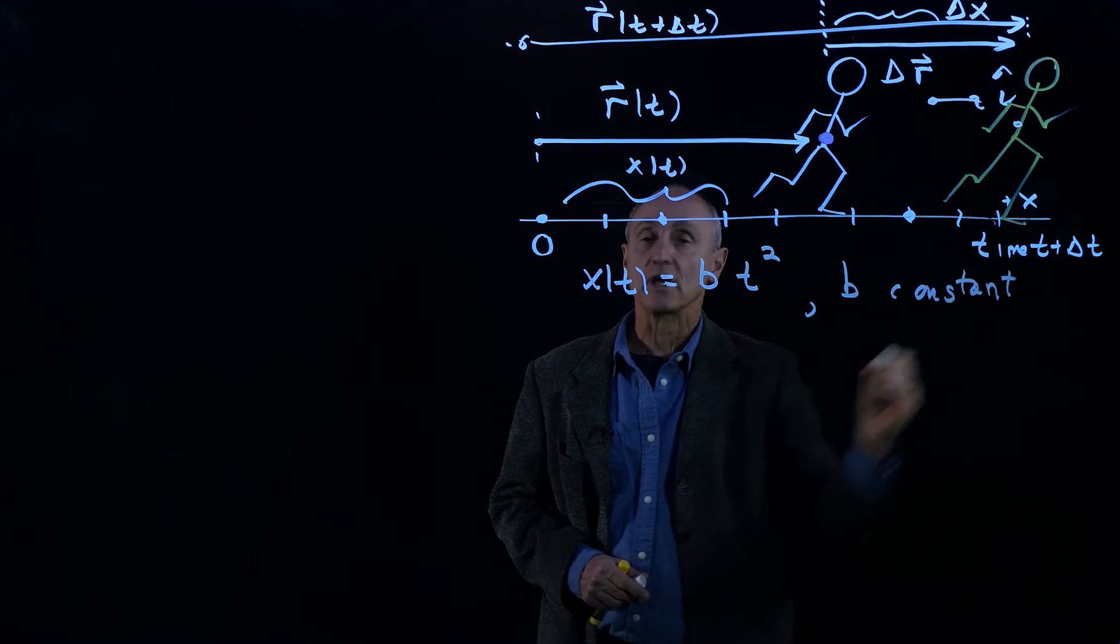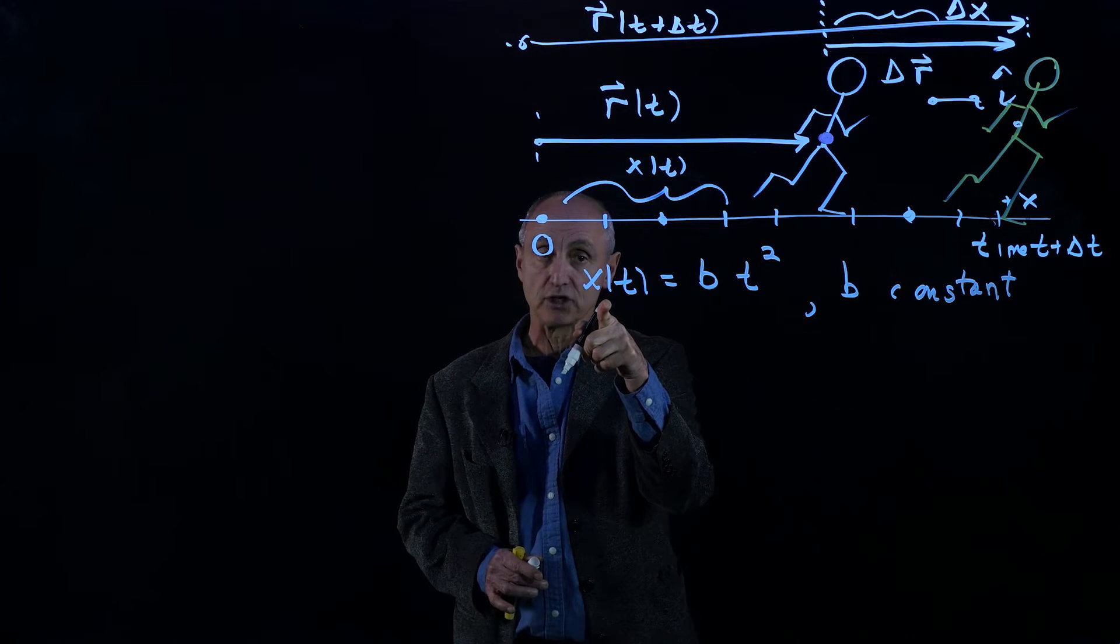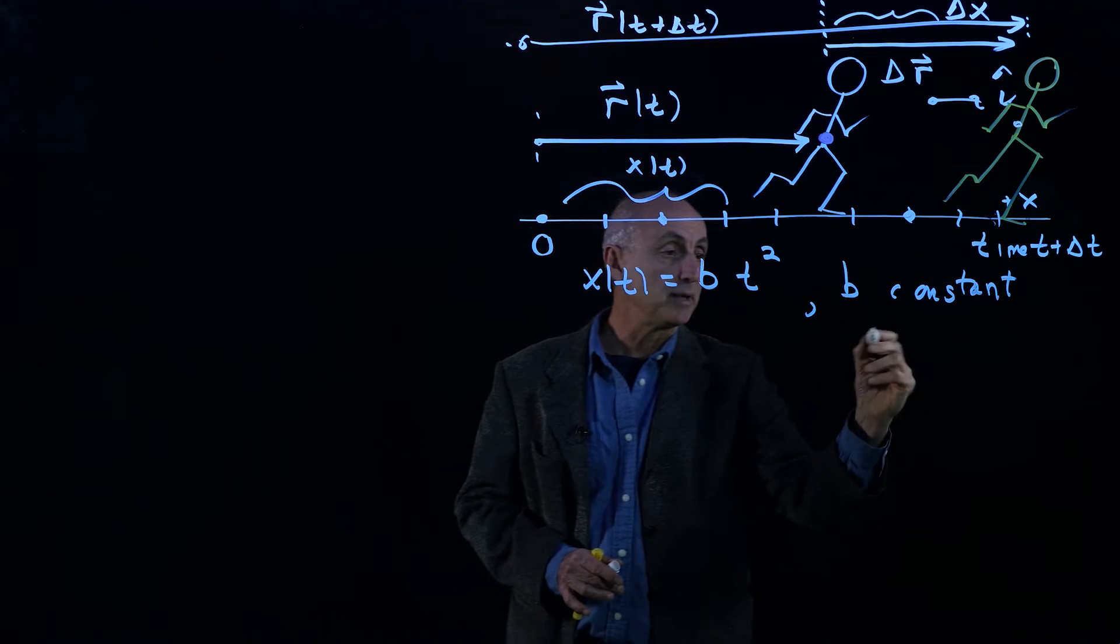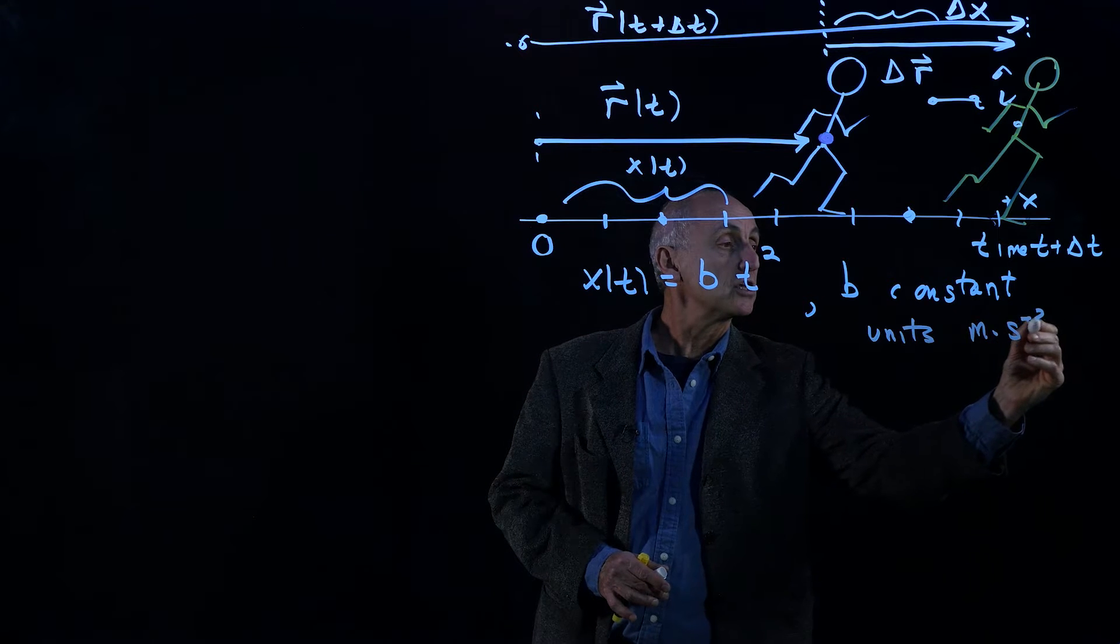It's always important in SI units to consider what the units of this constant is. Because a position function is measured in meters and time is measured in seconds, b is a constant, and it has units of meters per second squared.